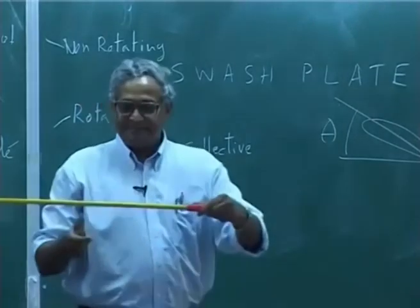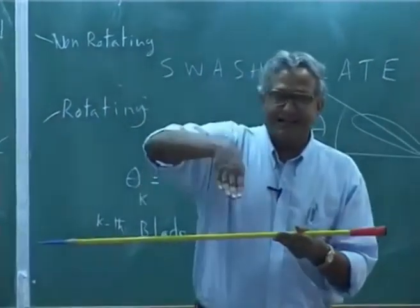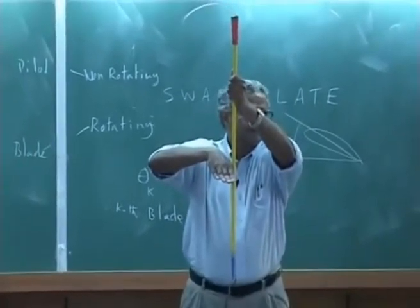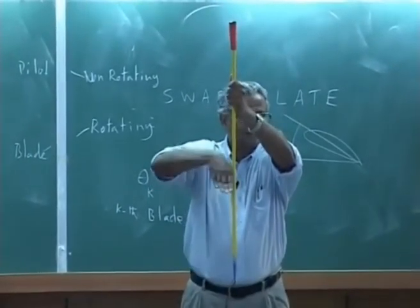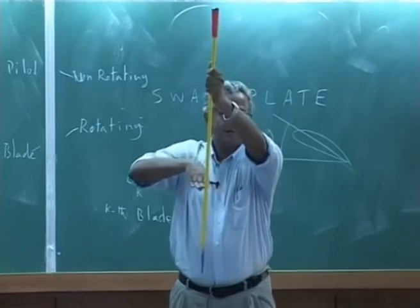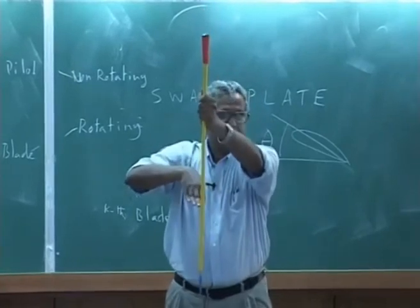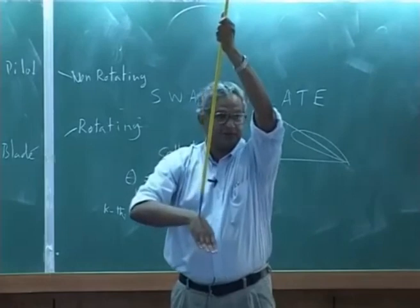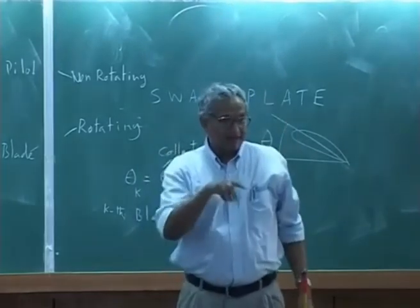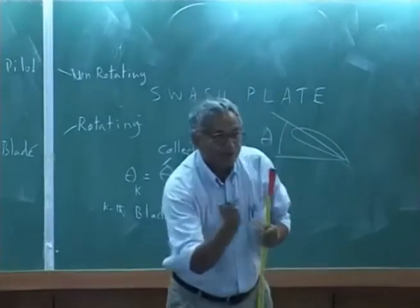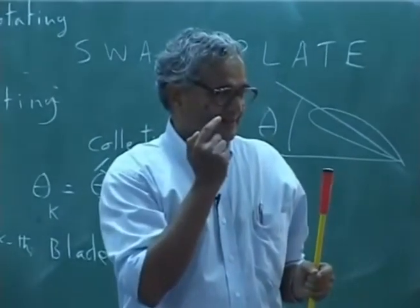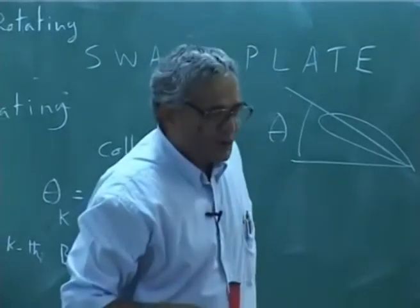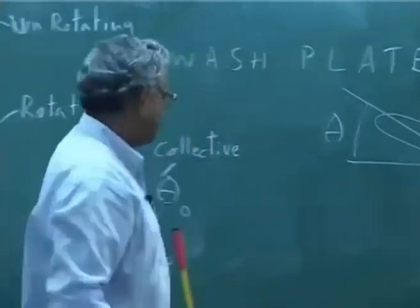Because if you tilt like this, if the control rod is here there is no change, but if the control rod is at the back, if I tilt it, it goes down and the control rod at the back goes up. So depending on the location of the control rod, we write the cyclic pitch input mathematically.